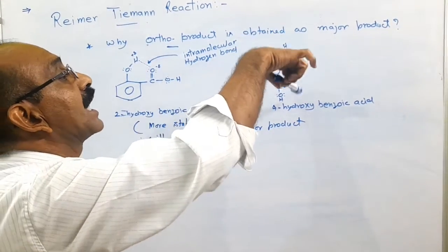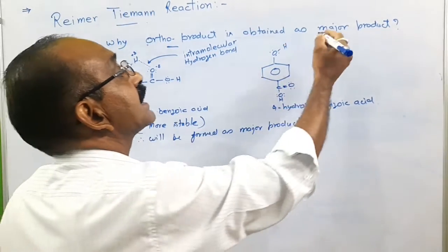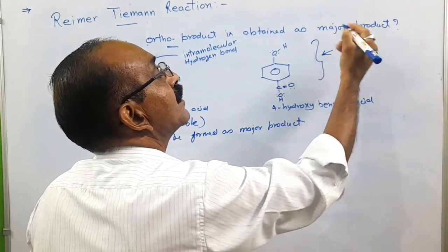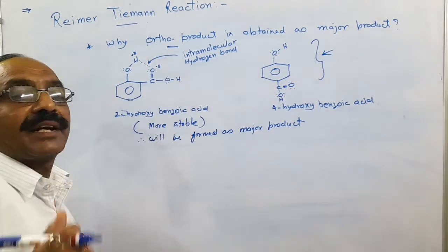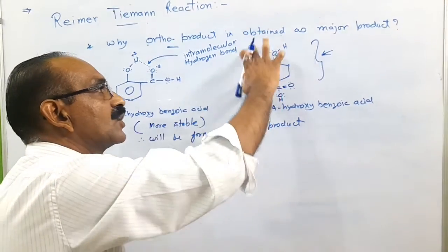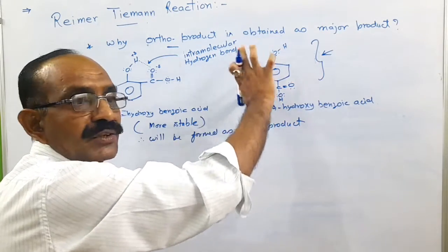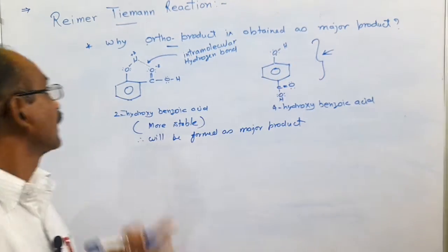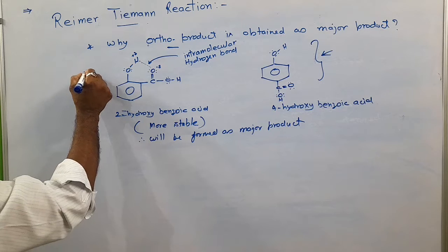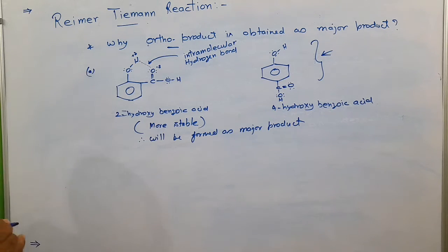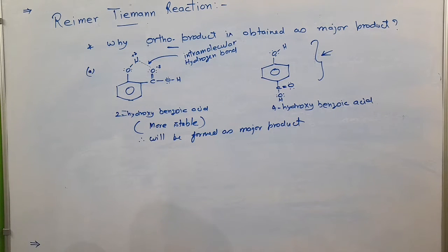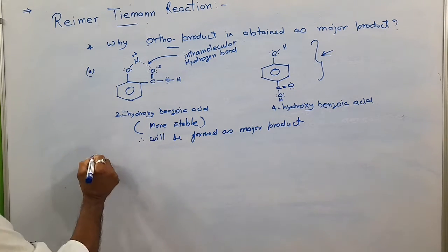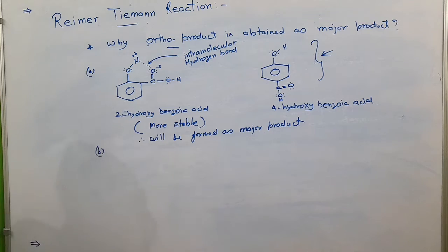Such intramolecular hydrogen bonding is not possible in 4-hydroxybenzoic acid because the OH and COOH groups lie on opposite (para) positions relative to one another. This is one way to explain why we obtain the ortho isomer as the major product.